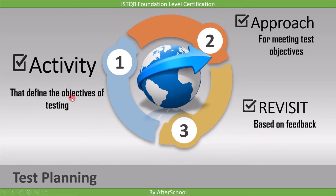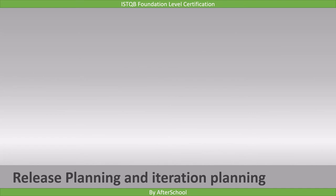These are the three main points of test planning: defining test objective, defining test approach, and updating the plan based on feedback. This is what we covered in the foundation level syllabus. But in agile development, it is a bit different.